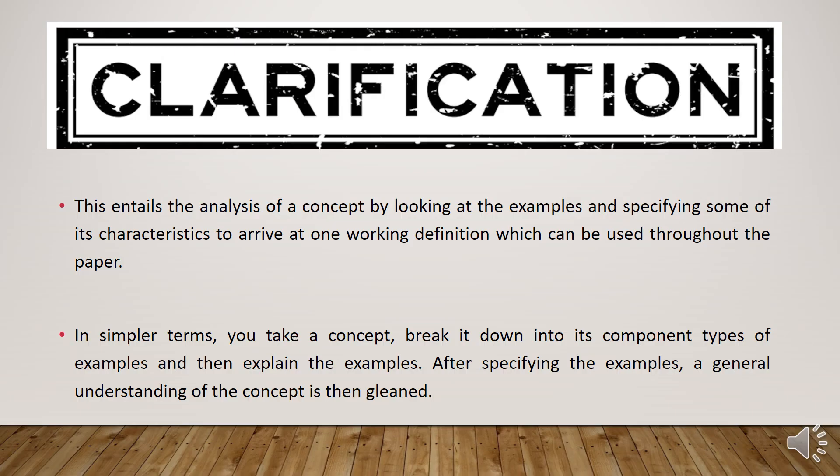Lastly, we have clarification. This entails the analysis of a concept by looking at the examples and specifying some of its characteristics to arrive at one working definition, which can be used throughout the paper. In simpler terms, we take a concept, break it down into its component types or examples, and then explain the examples. After specifying the examples, a general understanding of the concept is then made.